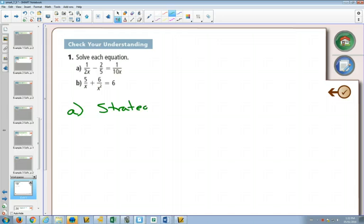So for part A, the strategy that I'm going to use here is to get a common denominator.